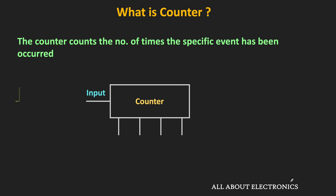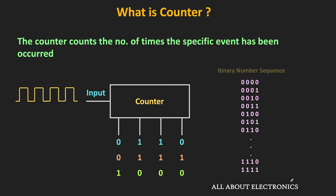As the input pulses are applied to the counter, the output of the counter — or more precisely, the output of each flip-flop inside the counter — changes in a specific sequence. This output of the counter may change in the binary sequence or it can also change in any other sequence. If the output of the counter changes in the binary number sequence, then it is known as the binary counter.